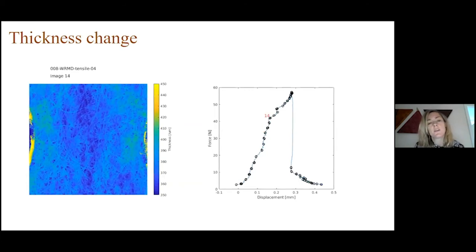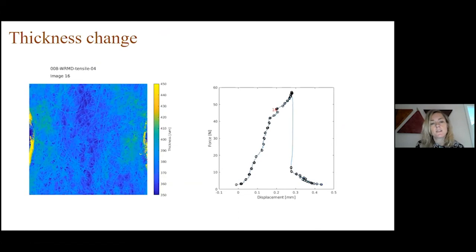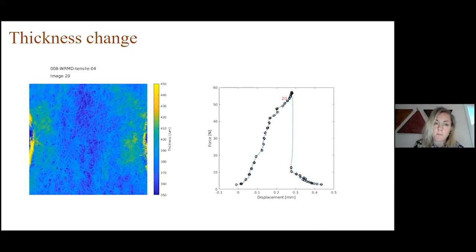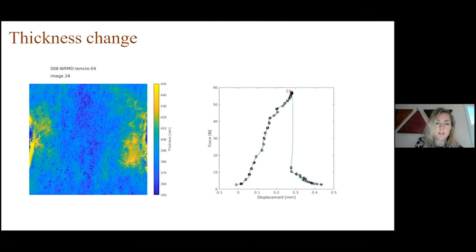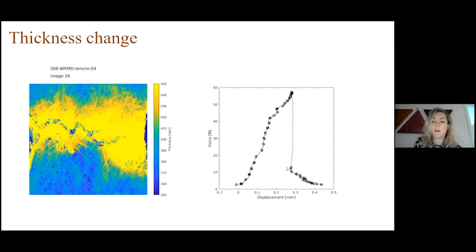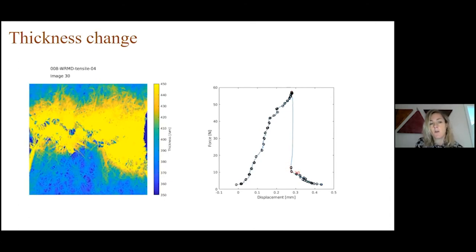Here we can study how the spatial variations in thickness change for the same sample during loading. We see that we have a localized increase in thickness in the same areas as where the strain localize before the sample breaks. The entire sample becomes thicker along the fracture.